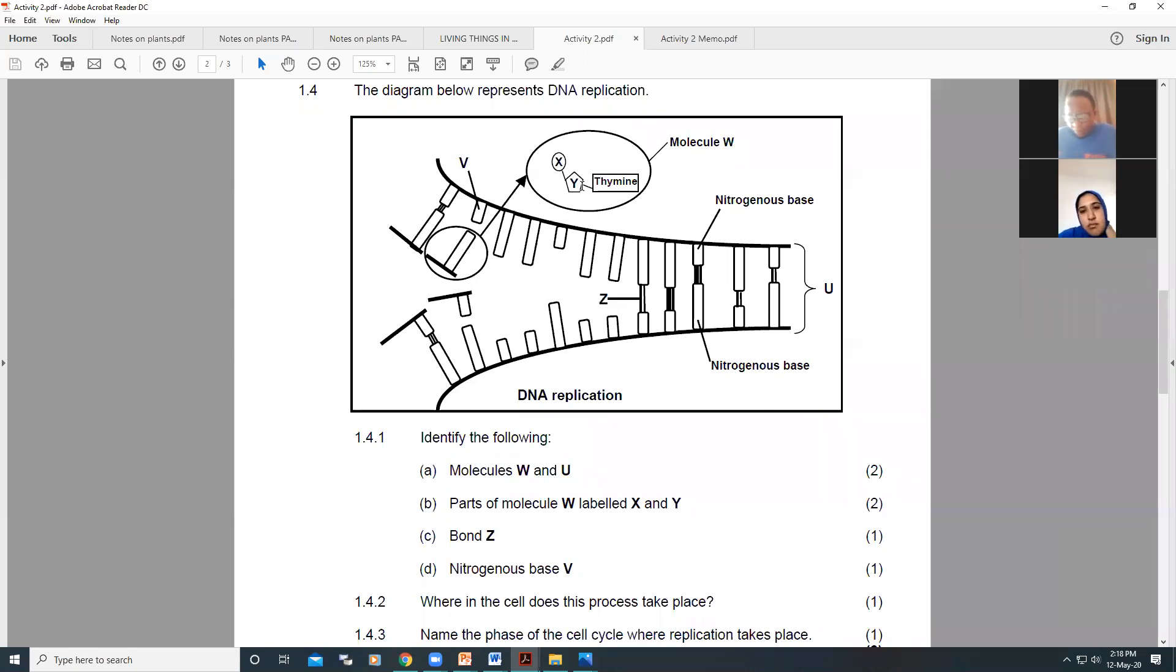Y would be the deoxyribose sugar. Very good. Now, if you write sugar alone, you can lose the mark. You must specify. Remember, they've given you a clue. They're saying the diagram below represents DNA replication. So it has to be a deoxyribose sugar. It can't be a ribose sugar. That's only found in RNA.